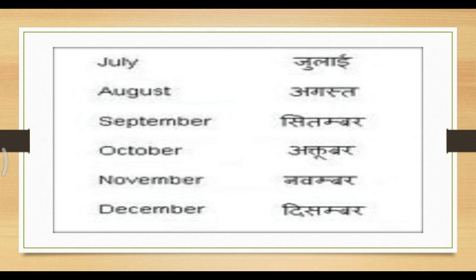September means September. December means December. The difference is there. Again one time: July, August, September, October, November, December.